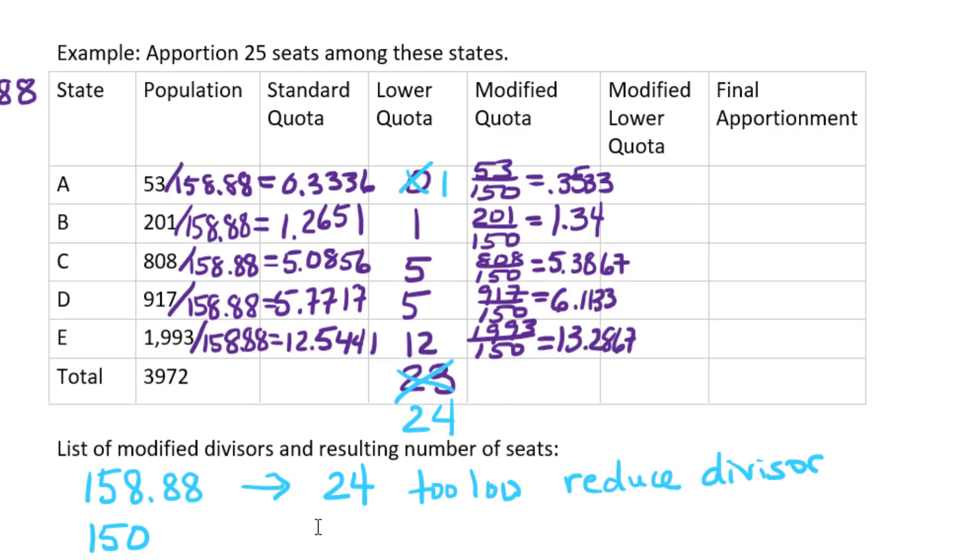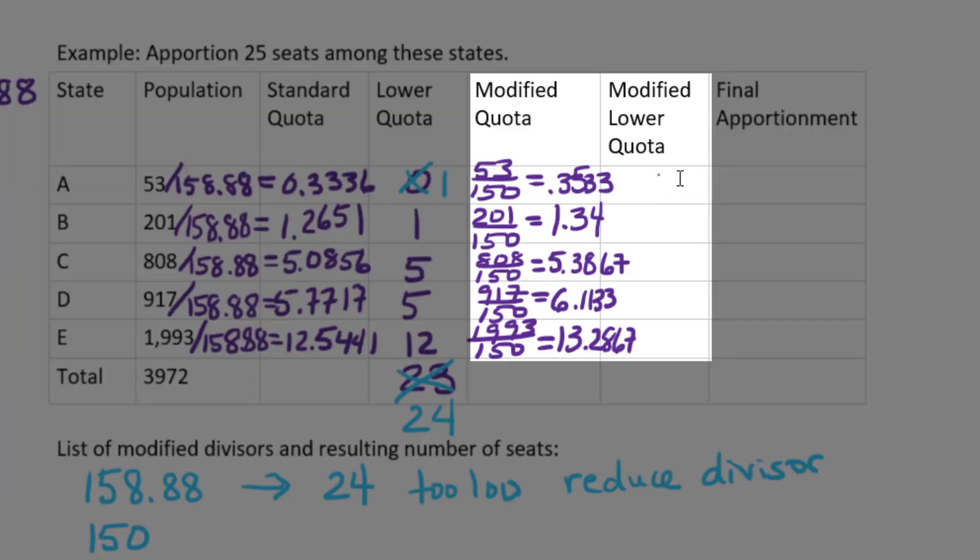So we've completed step two again, and now we're going to move on to step three. We're going to find the lower quotas and their sums. So the lower quotas are going to be 0, 1, 5, 6, and 13.